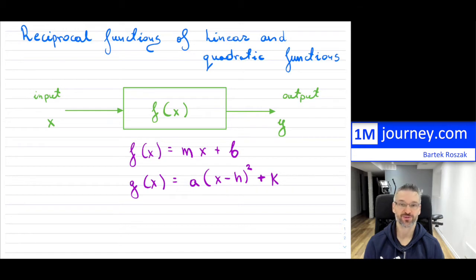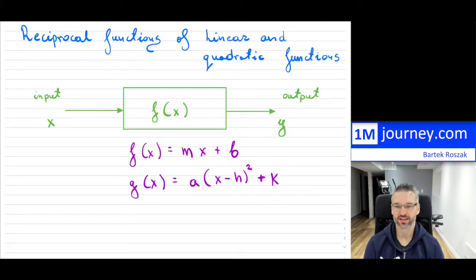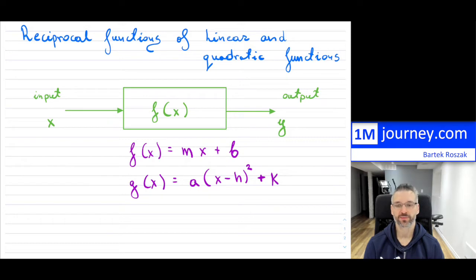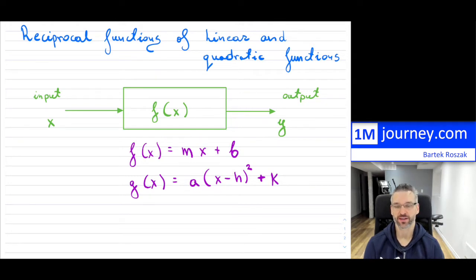Everyone should remember linear functions — your regular mx plus b, where M is your slope and B is your y-intercept. They're just lines. And I hope everybody remembers quadratic functions, which you most likely started in grade 10 and continued in grade 11. In advanced functions, you should be OK. The quadratic G of X is in vertex form: it's A times (X minus H) squared plus K, where H and K is your vertex.